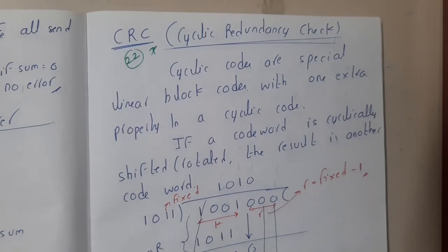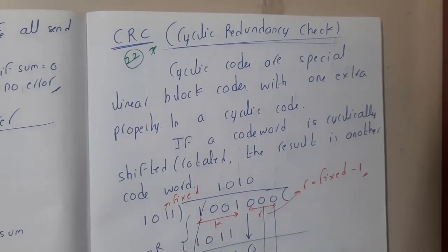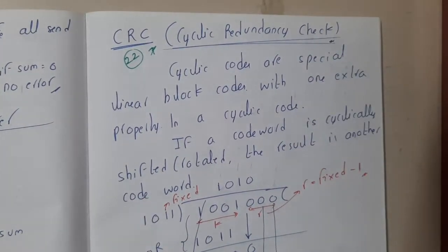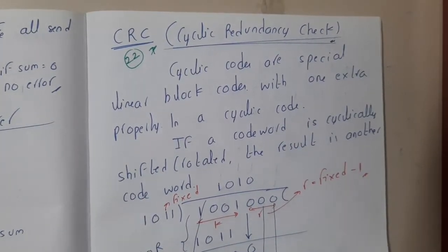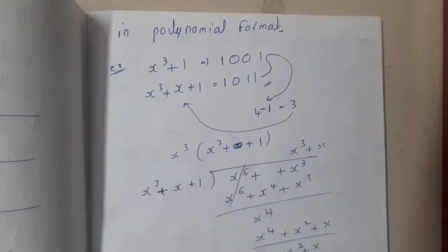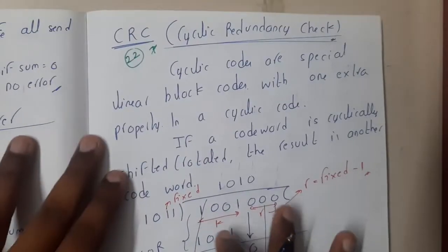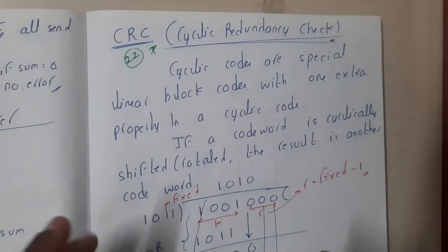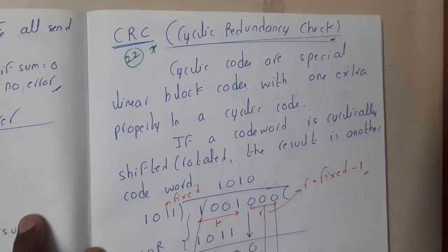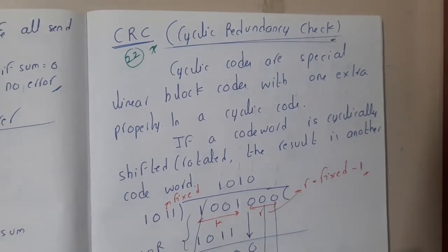Hello guys, we are back with our next lecture. In this lecture, let us go through the next concept of error control, that is Cyclic Redundancy Check. This is also an error detection method. Let us take some examples so that you can understand it. It is one of the easiest methods — it works like a normal division, but it is a binary division.